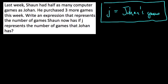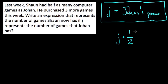So what do we know? First of all, Sean had half as many games as Johan. So Johan has this number of games, J. Multiply that by a half, or divide by two, and you get a half — and that's how many games Sean had. But that was last week, so that's the first part.